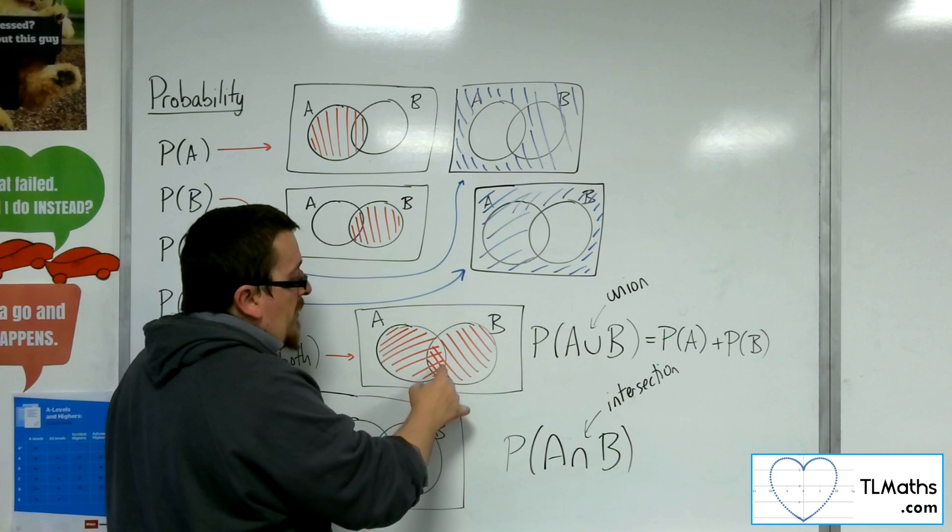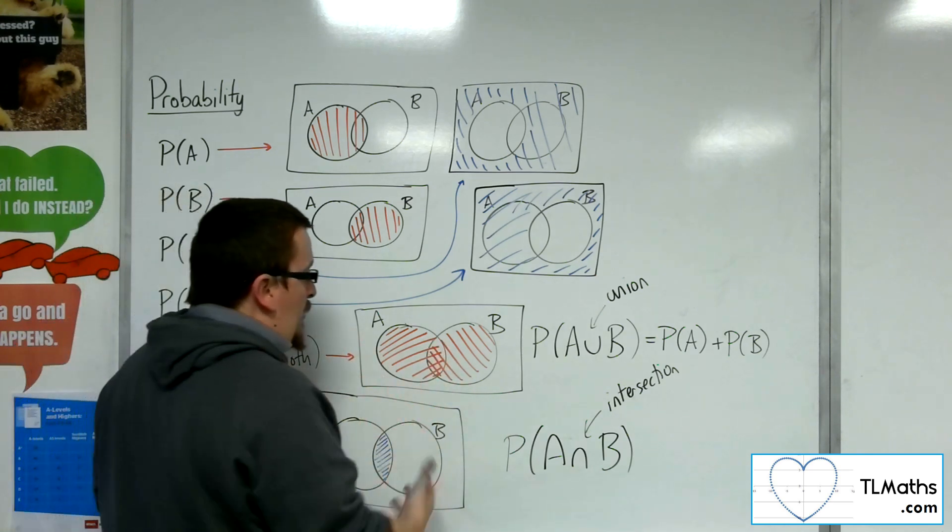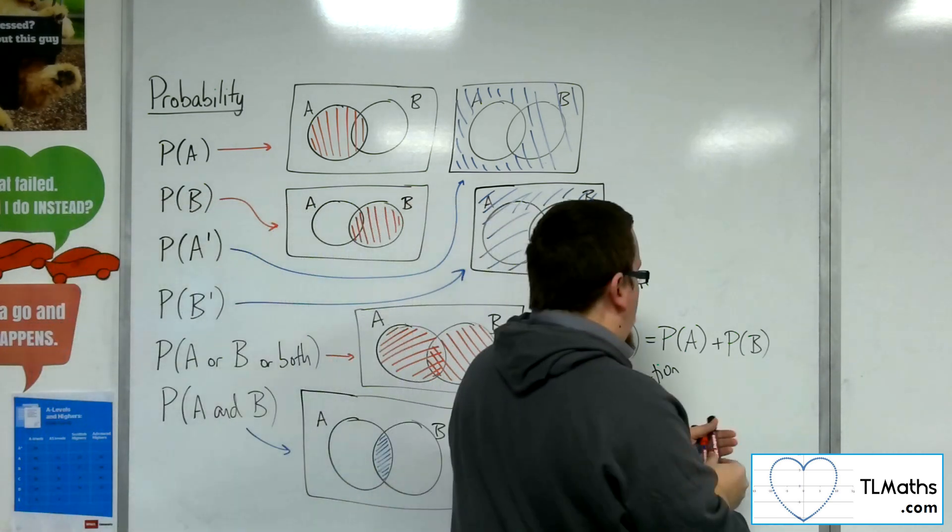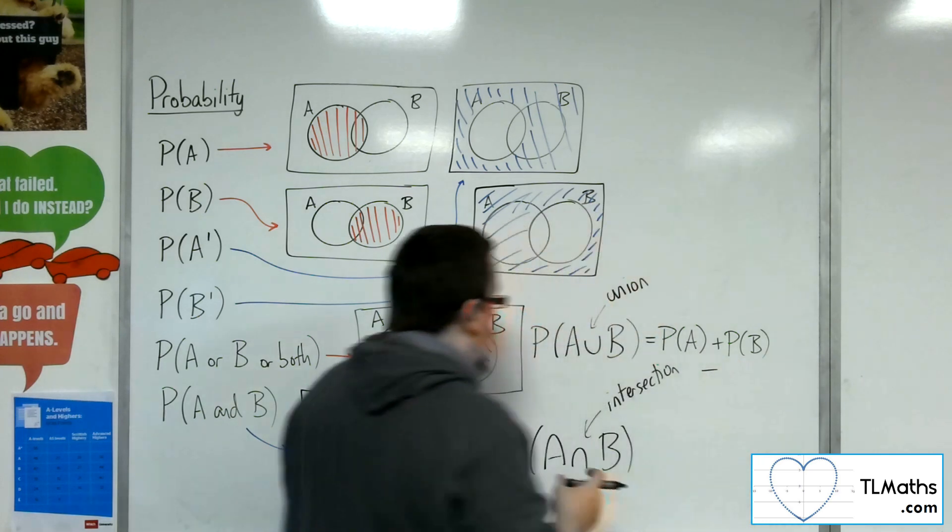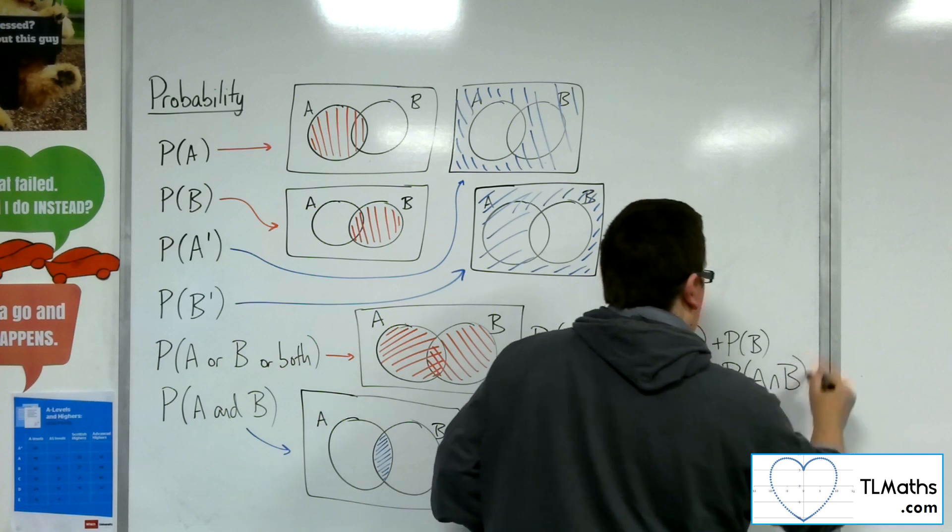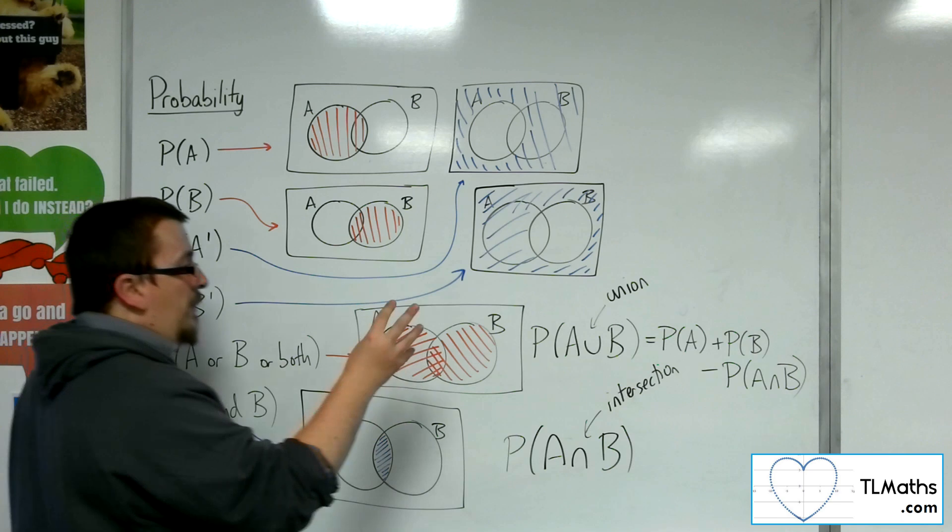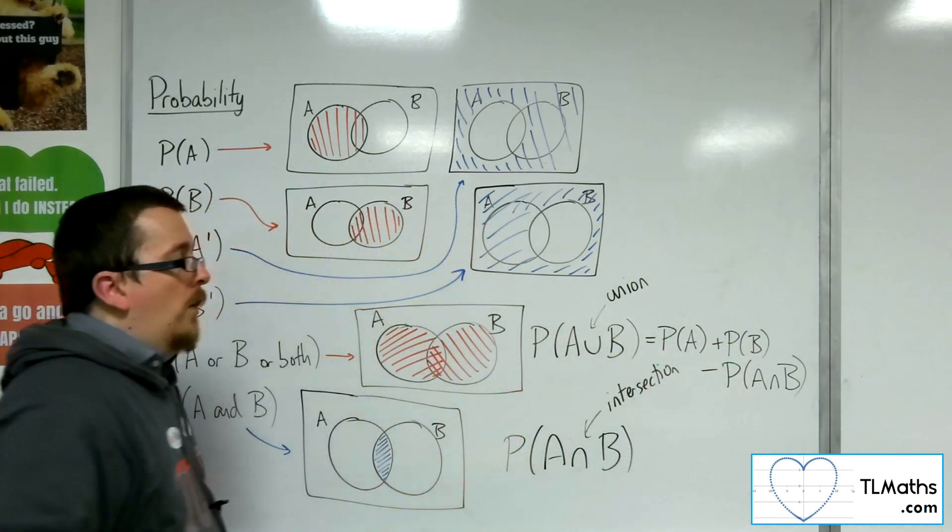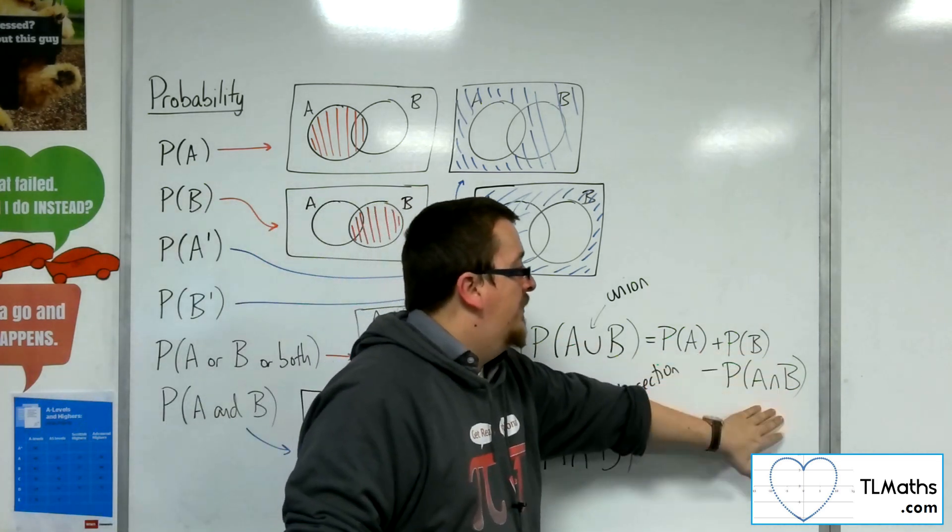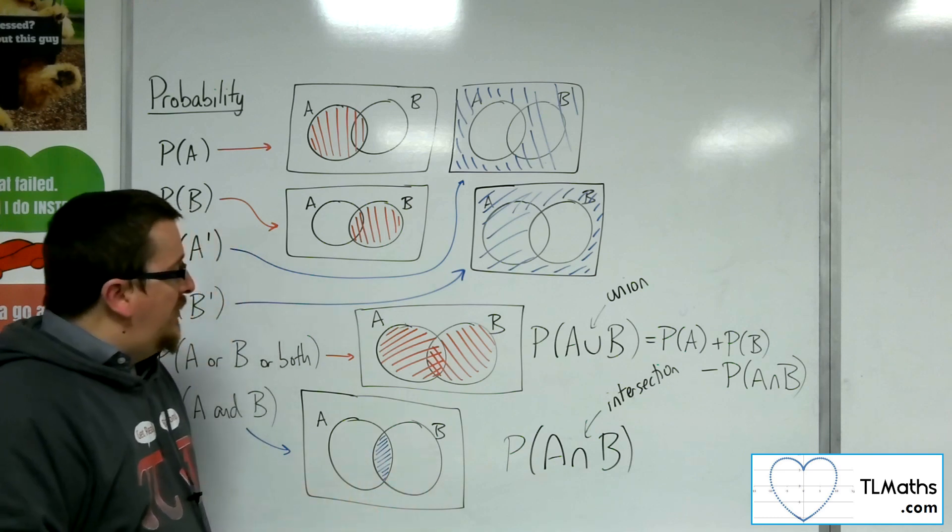And that means that that overlap part has been added twice. So I've included that twice. I only want to include it once. So I would need to subtract one of those intersections, which is represented by that A and B. So we now have a formula for the union of two events occurring: the probability of A plus the probability of B take away the intersection.